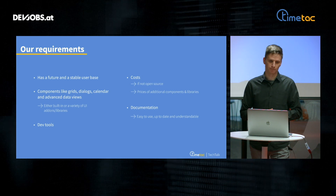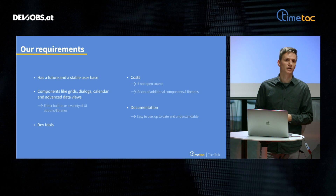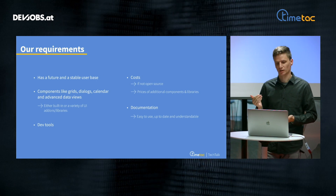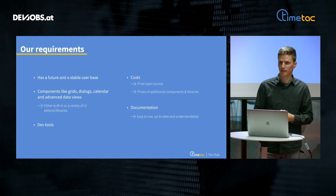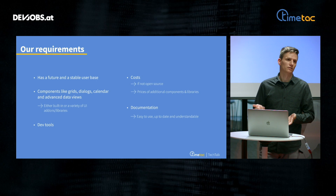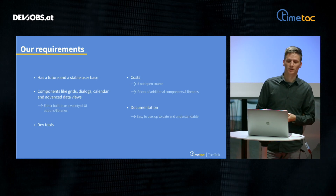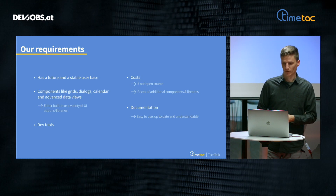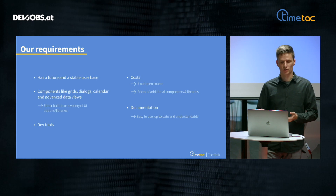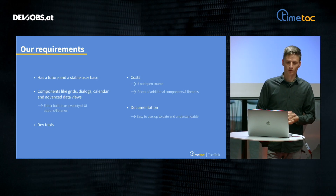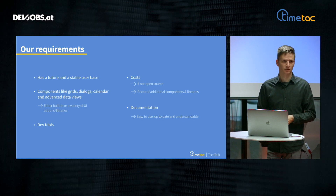So what were our requirements? It was important that the framework has a future and a stable user base. We needed components like grids, dialogues, calendars, and advanced data views — either built in or as add-ons. It was also important to have development tools to support developers to compile and so on. We also checked costs: if it's not open source, how much is it, and if there are additional components or libraries that have to be purchased. And one requirement that is often missed is good documentation — it's really important that it's easy to use, up-to-date, and understandable.